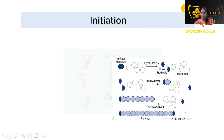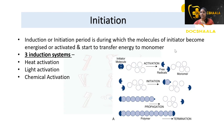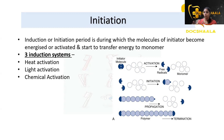In the initiation stage, as you can see in the picture, initiation is done after activation. During activation, the initiator molecule forms free radicals. The initiation stage is the induction period during which the molecules of the initiator become energized or activated — that is, the activation of free radicals happens here. So activation and initiation are at the same stage, and they start to transfer energy to the monomer.